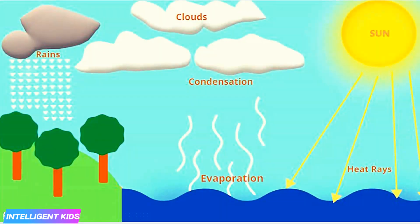Let's look at this picture to get a better understanding of how clouds are formed. As you can see, the sun's heat rays are hitting the surface of the river, and then after that the stage is called evaporation. In that stage the water evaporates into the air. The second stage is condensation, where all the water molecules stick together and form a cloud. And after that, when the clouds reach a mountain and they can't go further because they are filled with water, it rains.